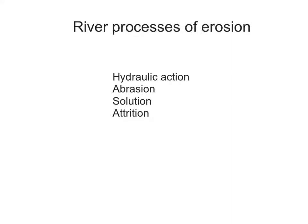Welcome to this tutorial about processes of erosion in a river. There are four main ones: hydraulic action, abrasion, solution, and attrition.